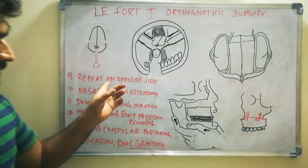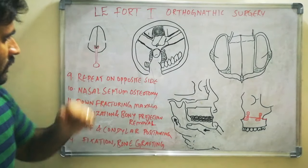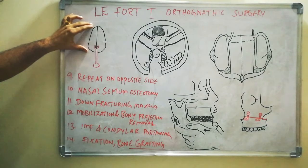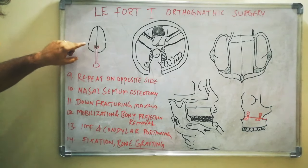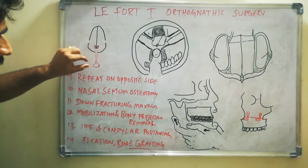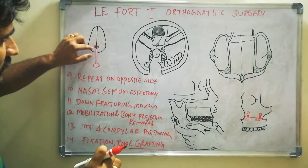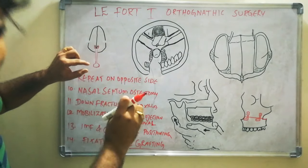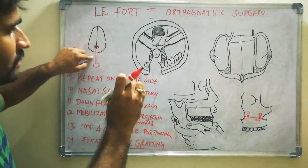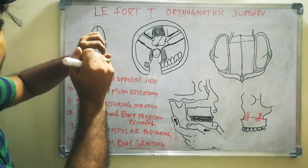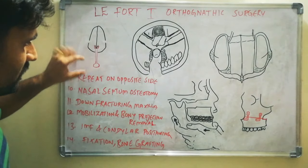The next step is to repeat the exact same procedure on the opposite side. After that, nasal septum osteotomy is performed. A specialized nasal septal osteotome is placed behind the anterior nasal spine and positioned posterior-inferiorly. The direction of this instrument should be posterior-inferiorly; tap on it to separate the nasal septum from the nasal floor.